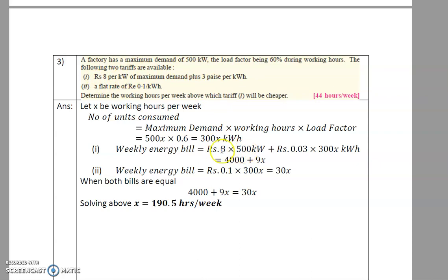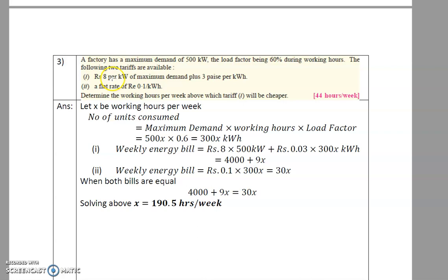Weekly energy bill under Tariff 1: 8 × 500 = rupees 4000 (maximum demand charge) plus 0.03 × 300x = 9x (energy charge), giving 4000 + 9x. Under Tariff 2: rupees 0.1 × 300x = 30x. Equating both tariffs to find the break-even point: 4000 + 9x = 30x.